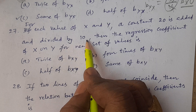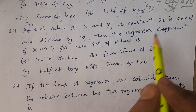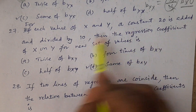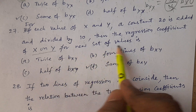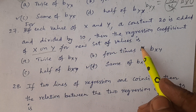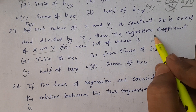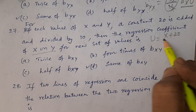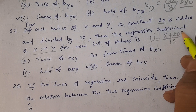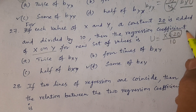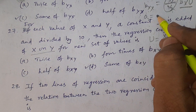For each value of x and y, a constant 20 is added and divided by 10. Now we see this is another kind — it involves both shifting the origin and scale. A constant 20 is added and divided by 10, then the regression coefficient of x on y for the new set of values.